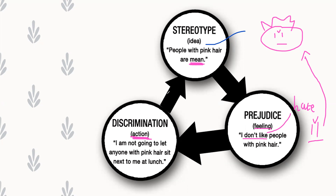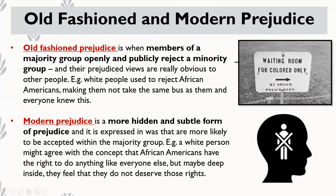We've also got two types of prejudice: old-fashioned and modern. Old-fashioned prejudice is when members of a majority group openly and publicly reject a minority group and their prejudiced views are downright obvious to everyone. For example, in America in the olden days, there were sections of the bus dedicated to African-Americans compared to white people, and 'waiting room for colored only' signs — the prejudice was very clear to see. Today, modern prejudice is more hidden — people keep those negative feelings inside their heads and don't express them openly.